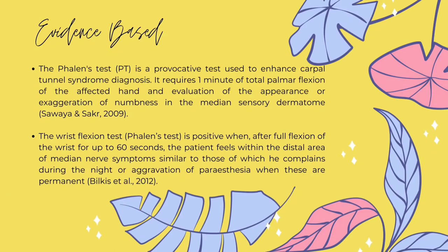We have now progressed to the evidence base. According to a study by Sawaya and Saar in 2009, the Valen test is a provocative test that aids in the diagnosis of carpal tunnel syndrome. It takes 1 minute of total palmar flexion of the affected hand as well as an evaluation of the appearance or exaggeration of numbness in the median sensory dermatome. Next, according to Bill Kiss et al. in 2012, the wrist flexion test — that is, the Valen test — is positive when the patient feels pain in the distal area of the median nerve, symptoms similar to those complained about during the night, or exacerbation of permanent paraesthesia after full flexion of the wrist for up to 60 seconds.